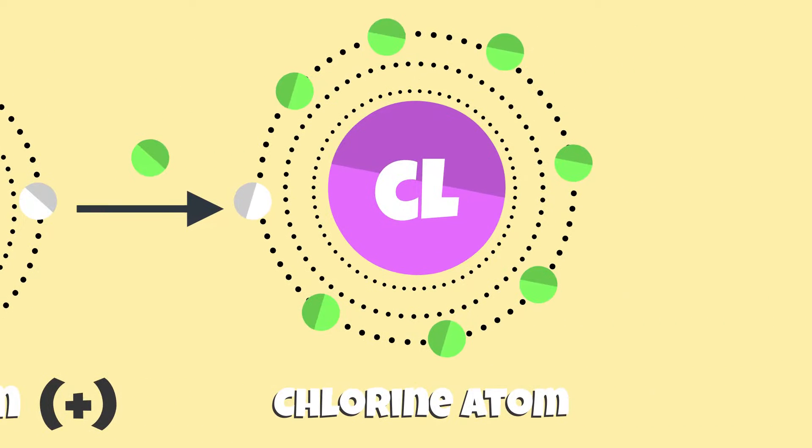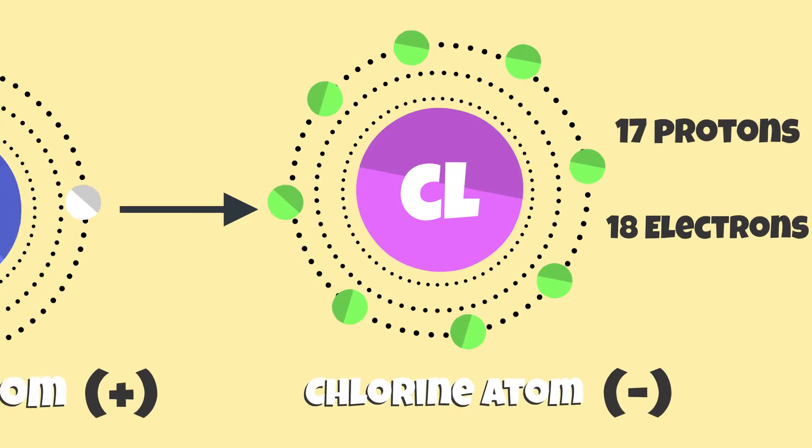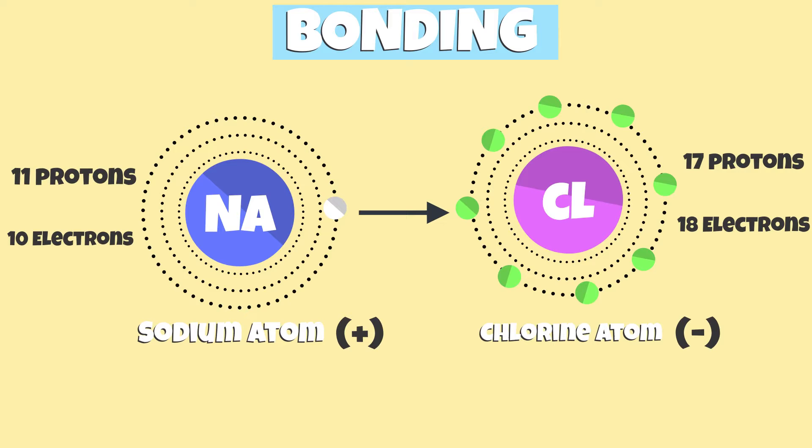Similarly, if an atom takes an electron, it will have more electrons than the number of protons, so it becomes a negative ion, and the atom has a negative charge. That's because the balance between the number of protons and electrons changes.